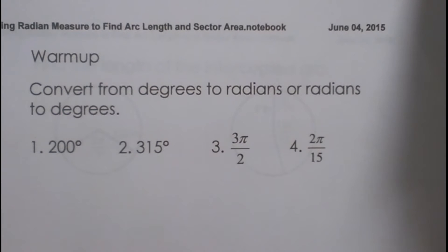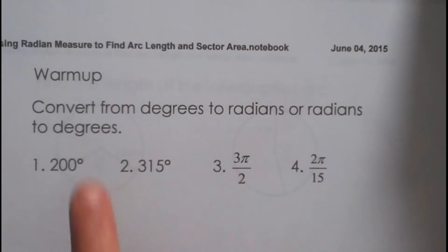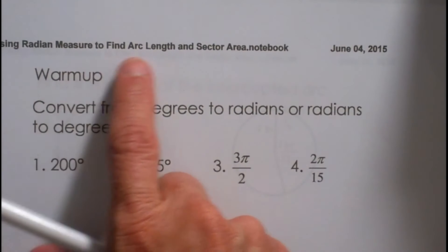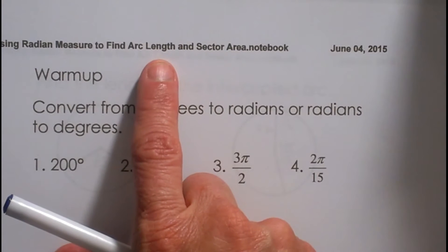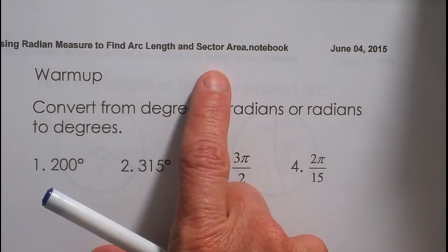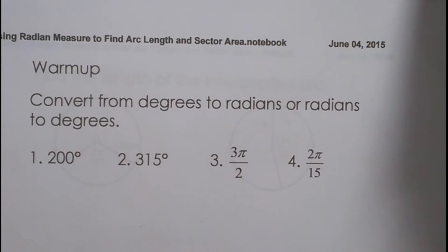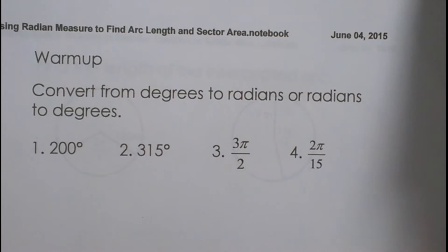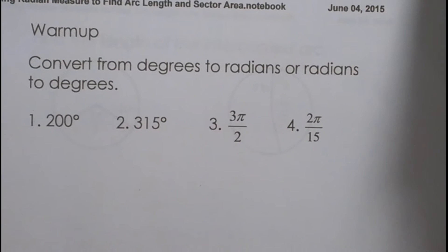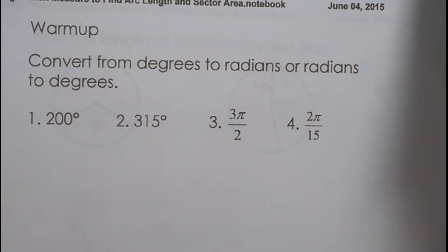Welcome back to Moo Moo Math. Today we are going to talk about how to find arc length and sector area using radian measure. So first we need to be comfortable with converting from degrees to radians and radians to degrees. So let's do a quick reminder.